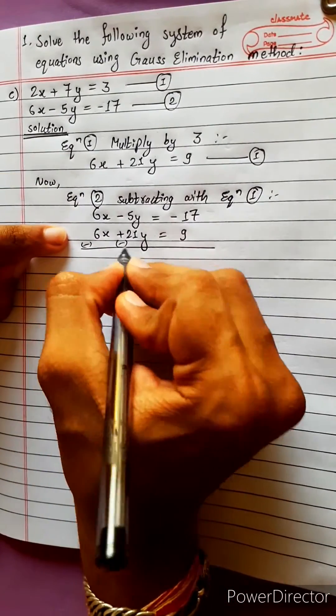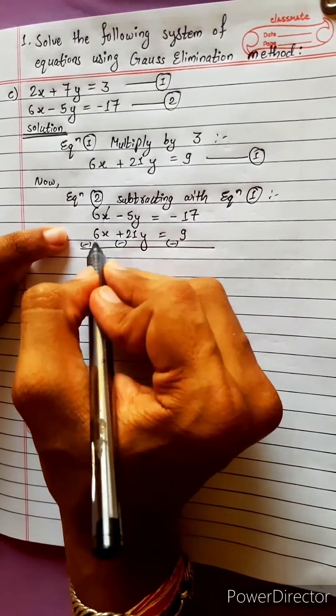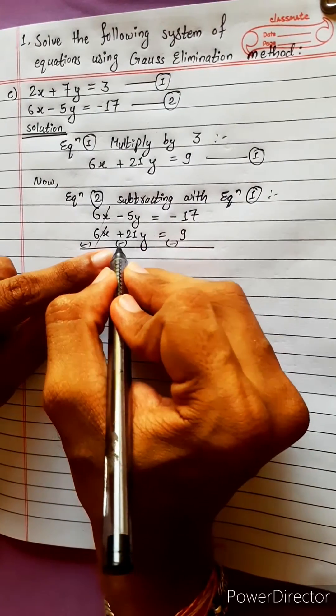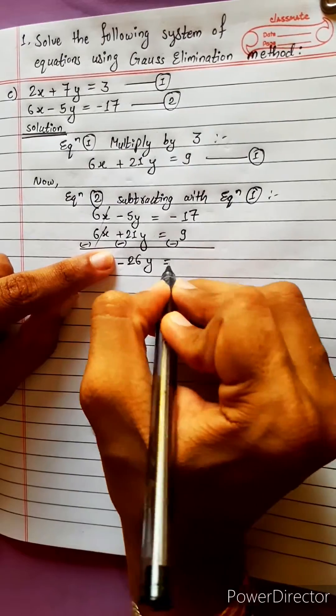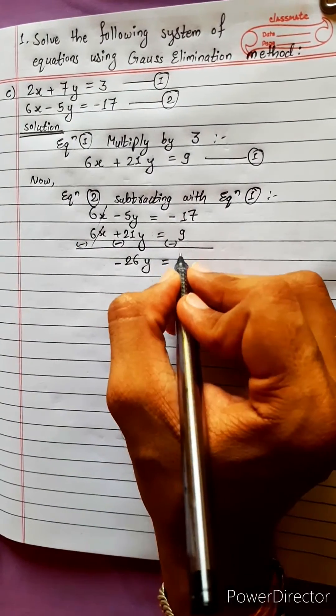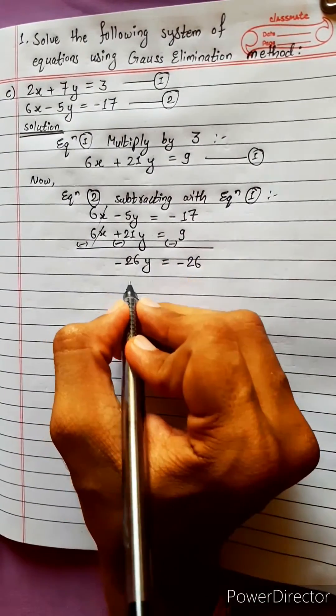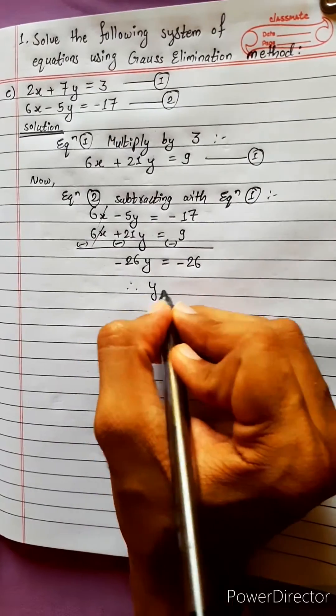Minus minus minus, plus minus cancel. 21 and 5 is negative. Now we have negative 26y equals to negative 26. Now we have cancel.